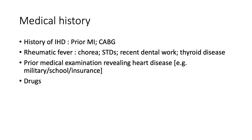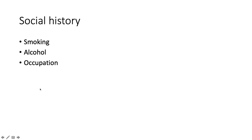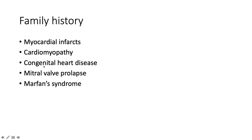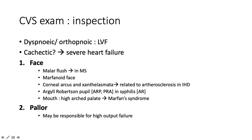Medical history includes history of ischemic heart disease — prior myocardial infarct or coronary artery bypass graft — and history of rheumatic fever, sexually transmitted diseases, recent dental work, thyroid disease, prior medical examinations (e.g., for school entrance, insurance, or military), and drugs — prescription, over-the-counter, herbal and recreational. Social history: smoking, alcohol (quantify), and occupation. Family history of ischemia, cardiomyopathy, congenital heart diseases, mitral valve prolapse, and Marfan syndrome — important.